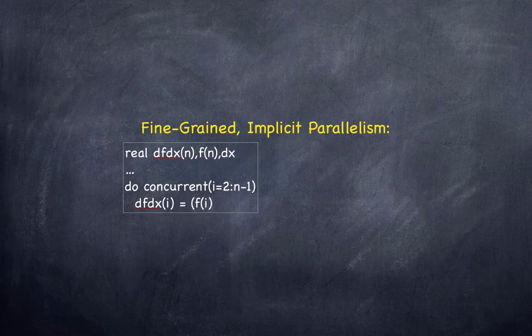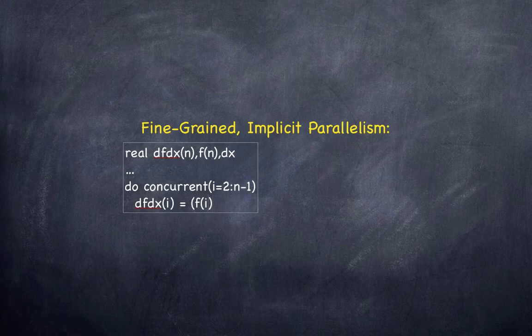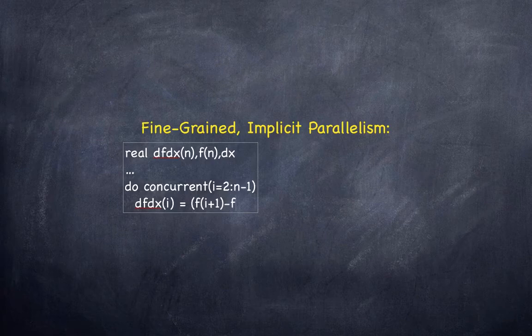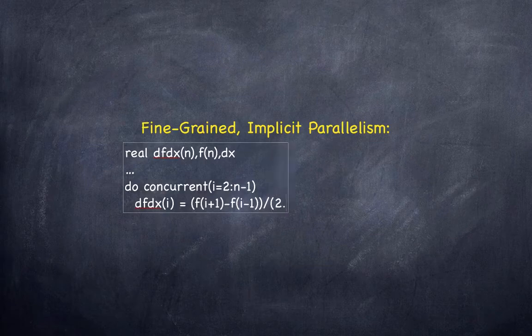So we're going to grab a point to the right of where we're calculating the derivative and subtract off a point to the left so we're using a simple central difference approximation here. And then divide by twice the grid spacing.